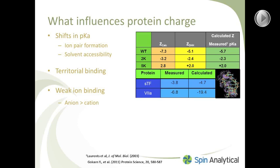The second thing that influences protein charge is territorial binding. Territorial binding is where an ion is confined to a region along the surface of the protein but not bound to a particular site. We are very used to site binding — say a calcium ion binding to an EF hand — but there is a whole class of ion binding that has more to do with surface potential. If two or three lysine residues are brought within a few angstroms of one another, you have a region with very high positive charge. A chloride ion will come in and hang around in that region; it doesn't bind to any site and will not be visible in crystallography or NMR.